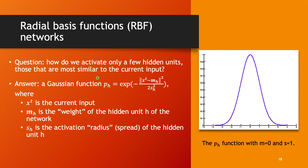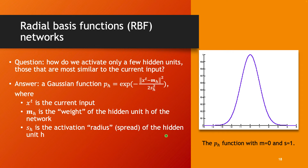The computation done by a hidden unit is instead based on a Gaussian function. Given the current input data point Xt, each hidden unit has a weight vector of the same dimension as the input. You compute the squared norm — checking how close the data point is to the weight vector MH — and divide by a parameter specific to that hidden unit, which plays the role of the activation radius, also called the spread of hidden unit H.